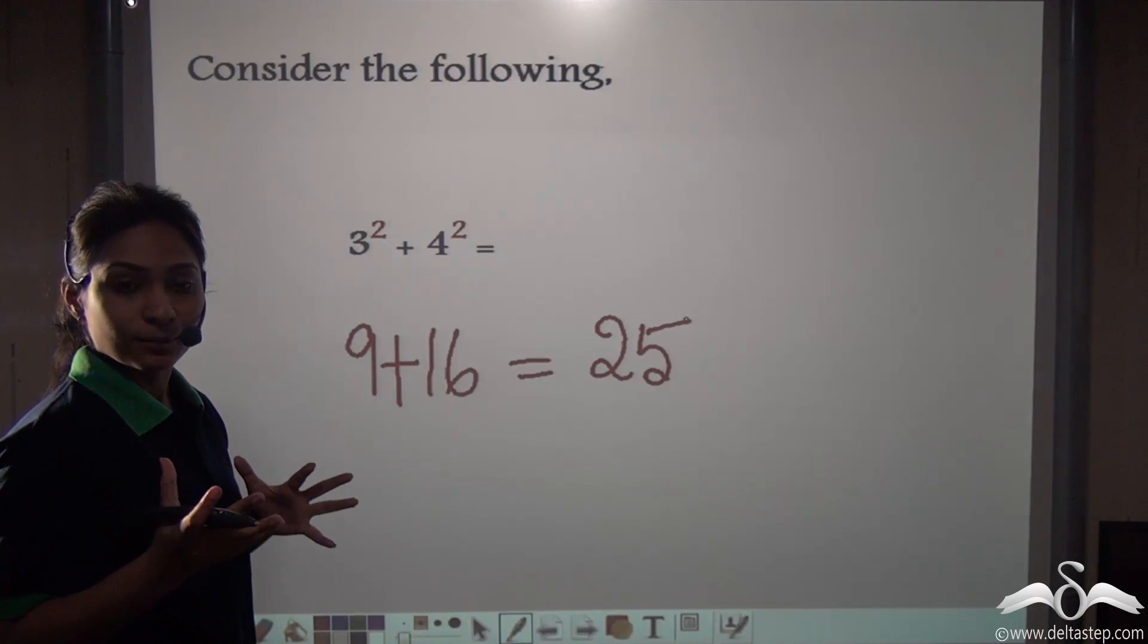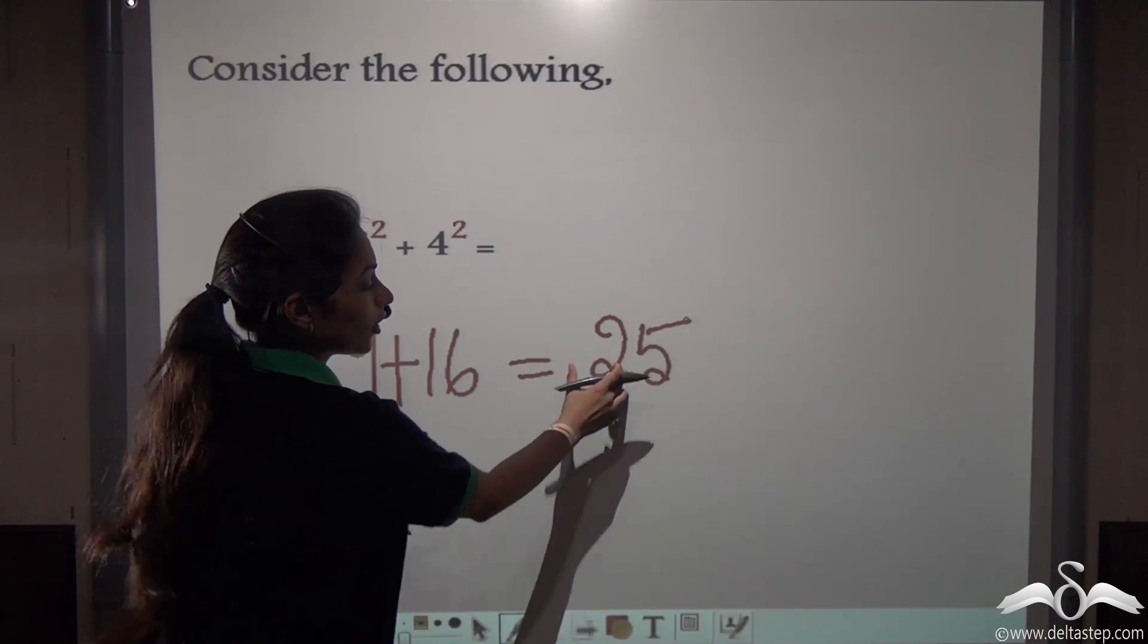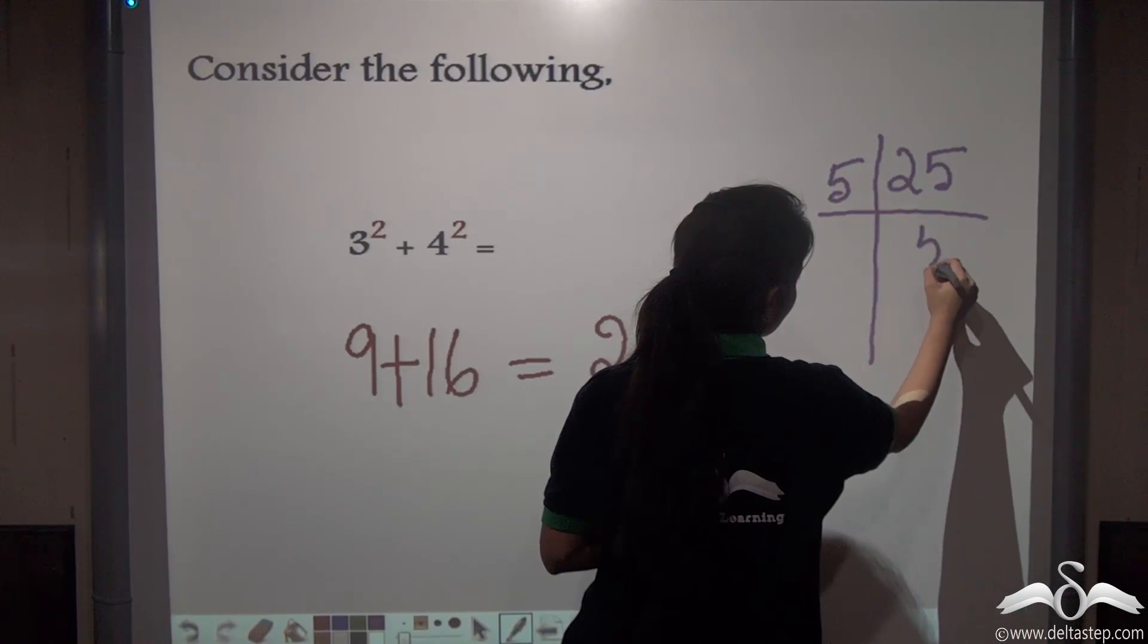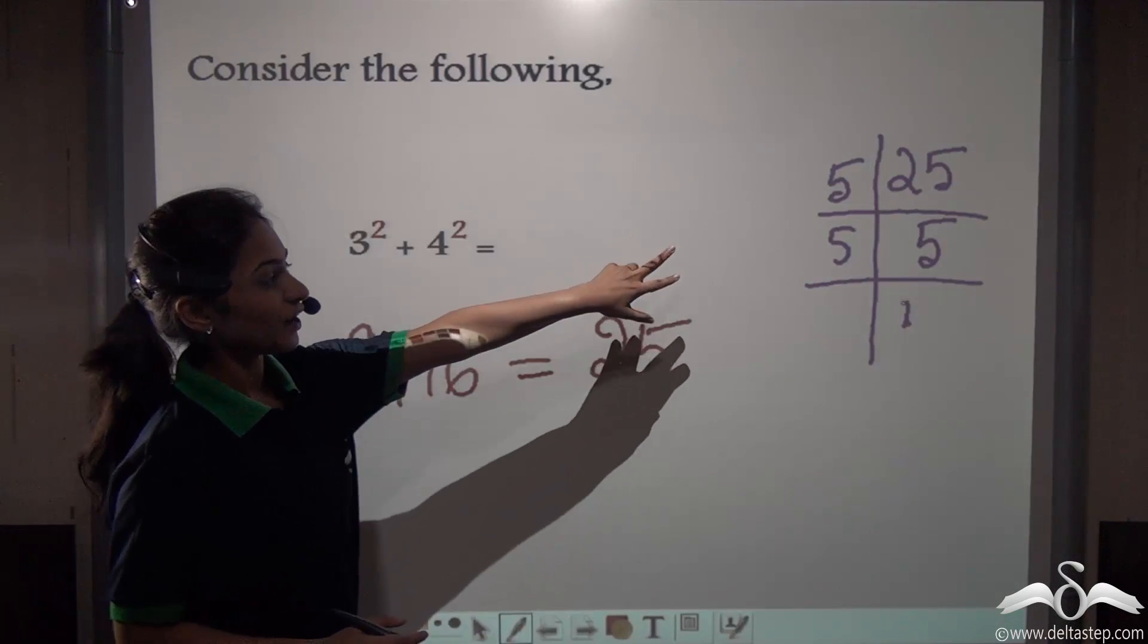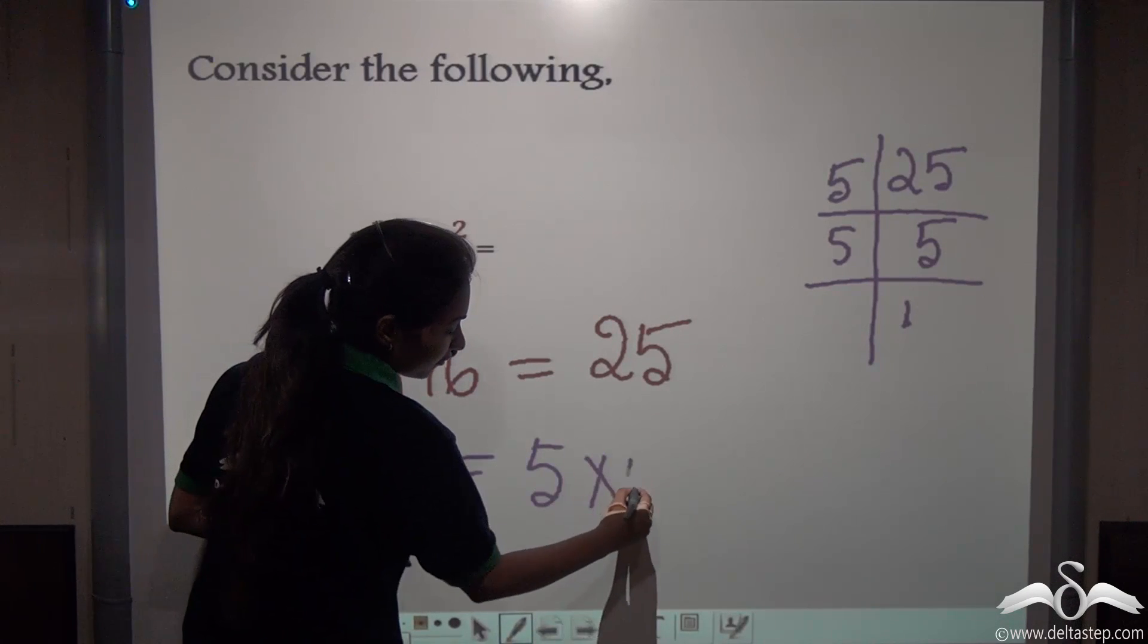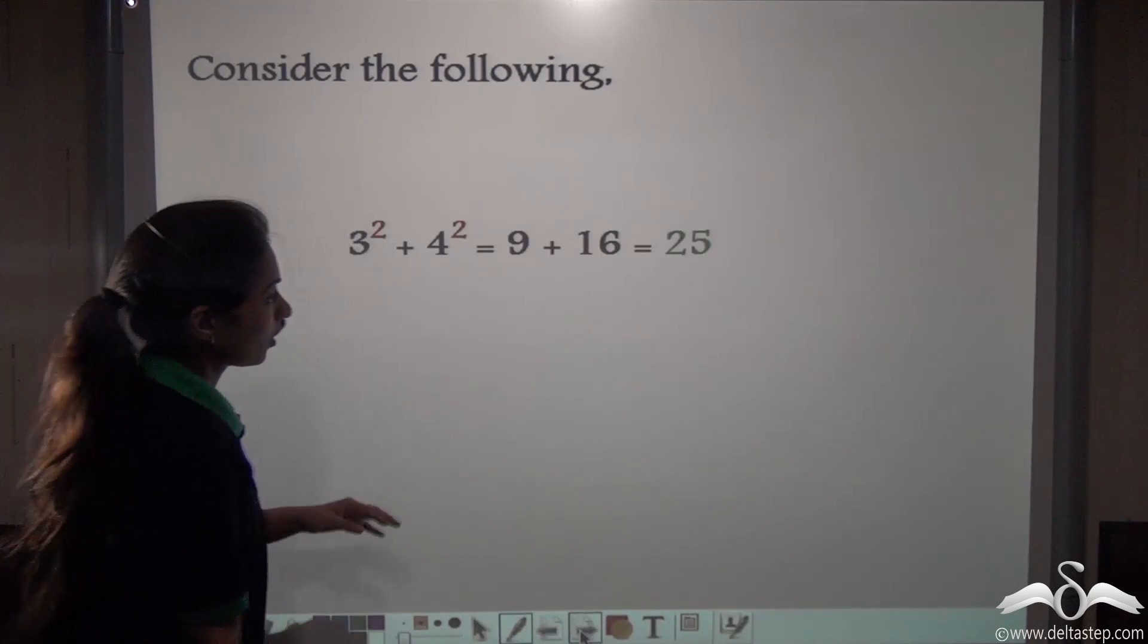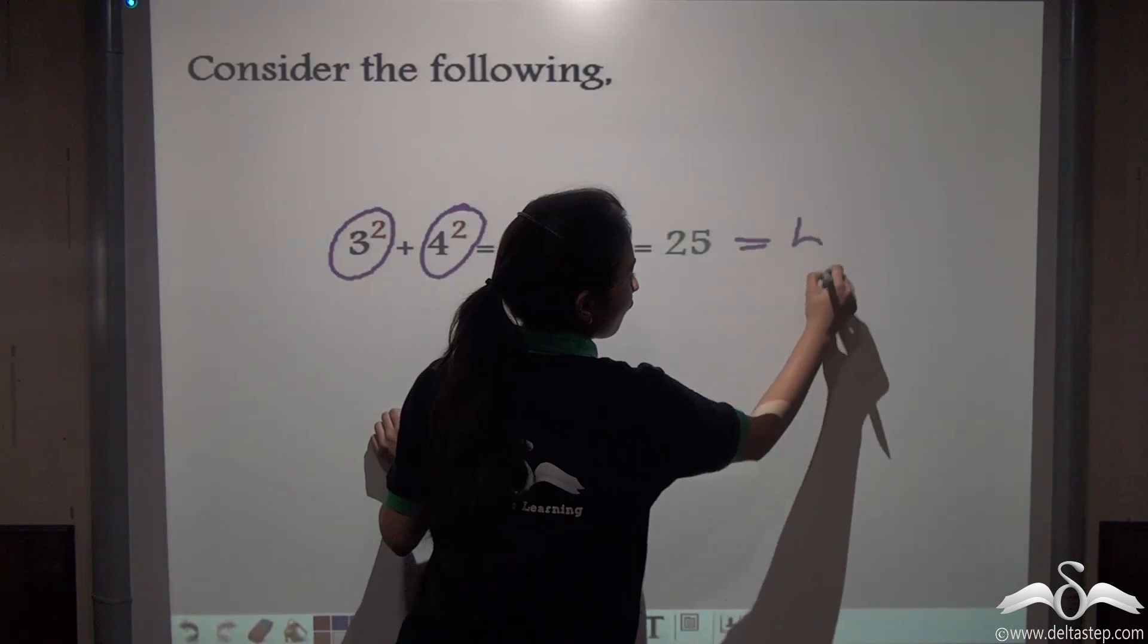Now you know that any number can be expressed as a product of prime numbers or prime factors. How can you express 25? 25 can be expressed as 5 into 5. Now 5 into 5 represents something that is 5 squared.